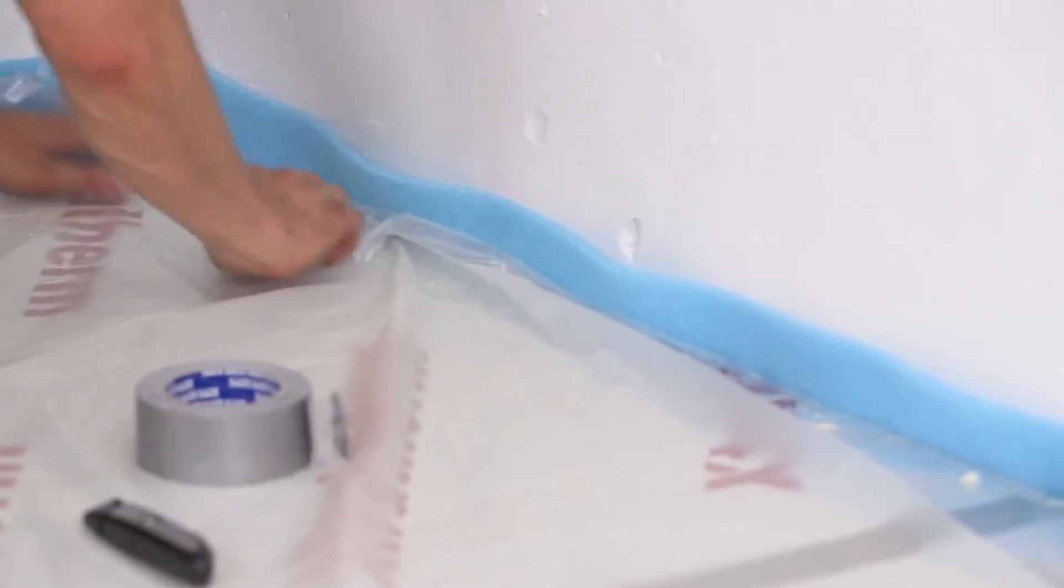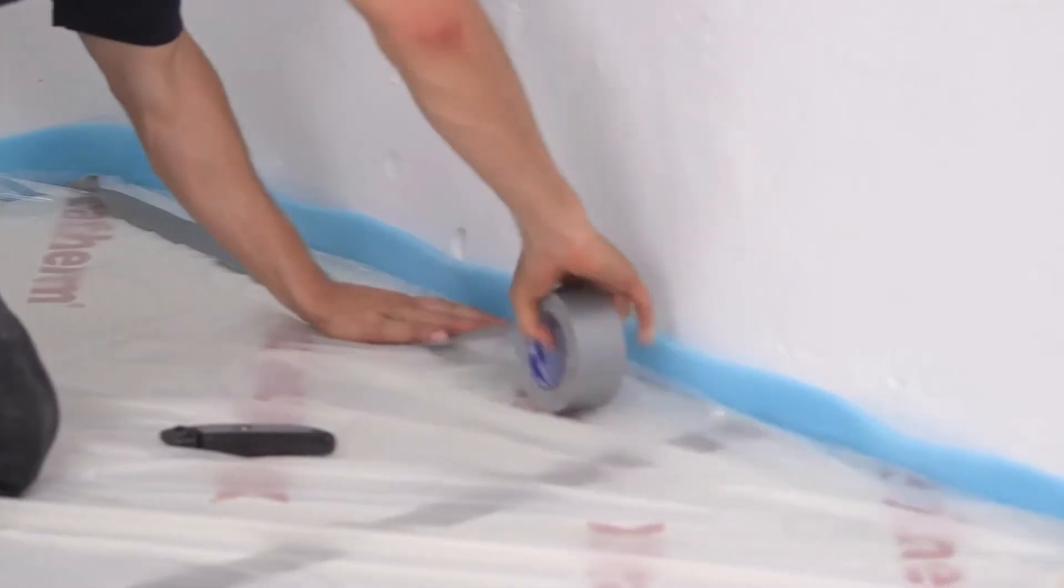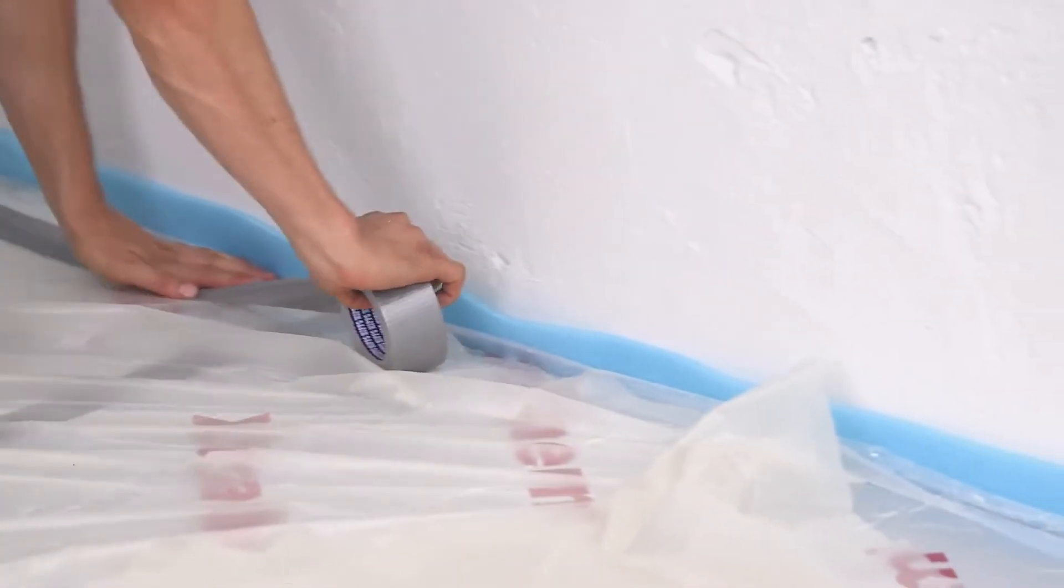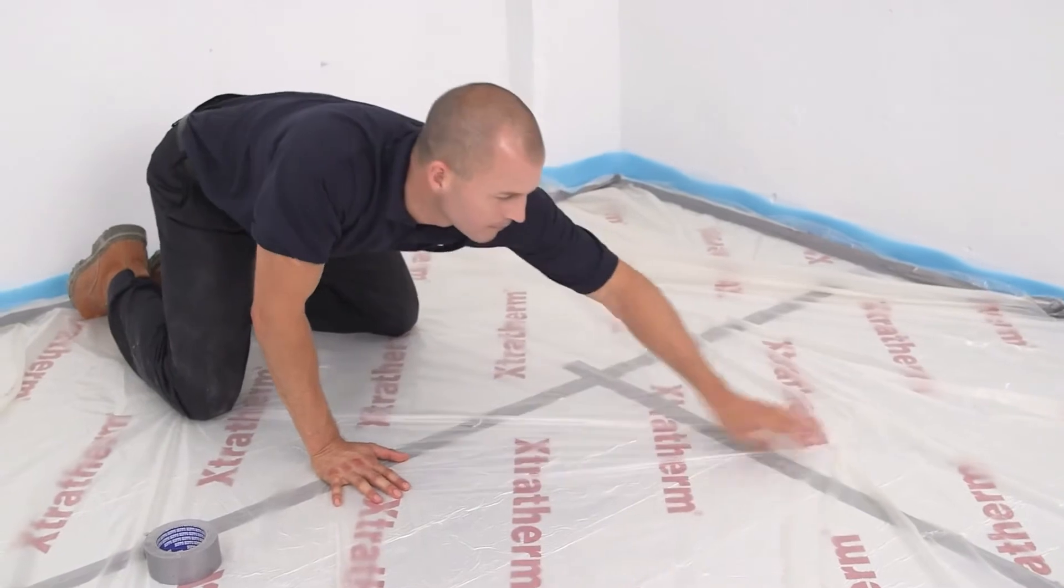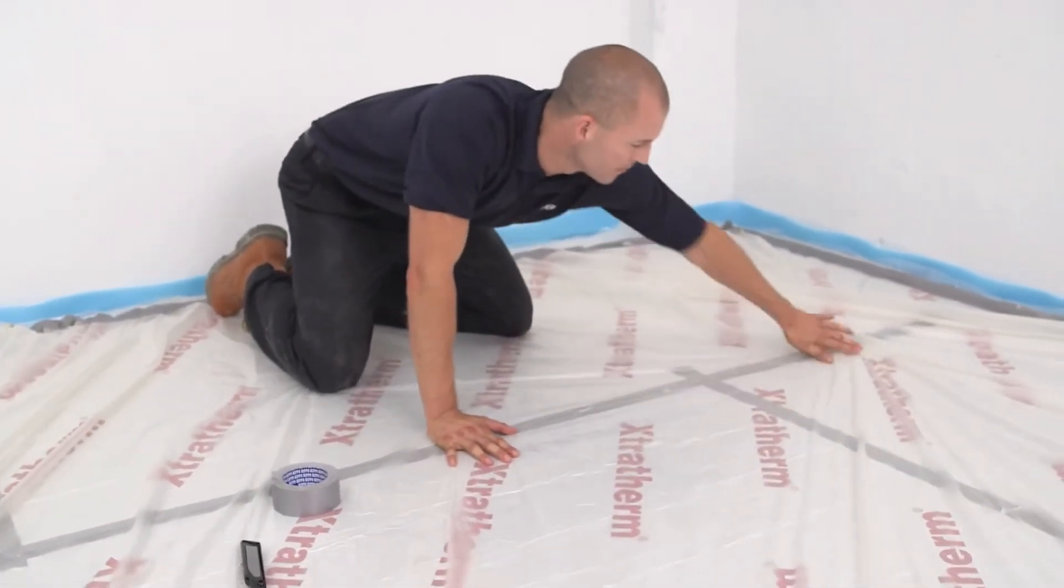A polyethylene film 0.15mm thick with 80mm overlaps should be placed over the insulation. This barrier prevents the screed from contaminating the insulation. It also stops liquid screeds from flowing into gaps in the insulation, which potentially leads to floating the boards.